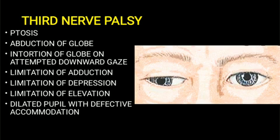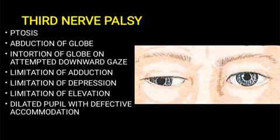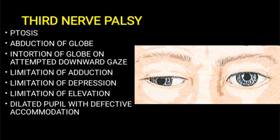The signs of third nerve palsy include: ptosis (drooping of upper eyelid) due to paralysis of levator palpebrae superioris; abduction and intorsion of the eyeball due to unopposed action of the lateral rectus and superior oblique; loss of adduction due to medial rectus paralysis; limited depression due to inferior rectus paralysis with intorsion from unopposed superior oblique; and limited elevation due to superior rectus paralysis. Additionally, the oculomotor nerve controls pupillary and accommodation reflexes, so third nerve palsy causes a dilated pupil and defective accommodation reflex.